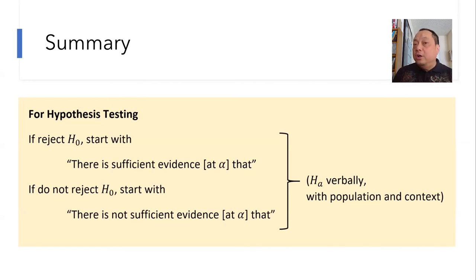Either way, you follow with HA verbally and in context. Make sure you include what the population is and what the particular context is about. Again, a lot of times, you can probably copy verbatim from the question prompt.